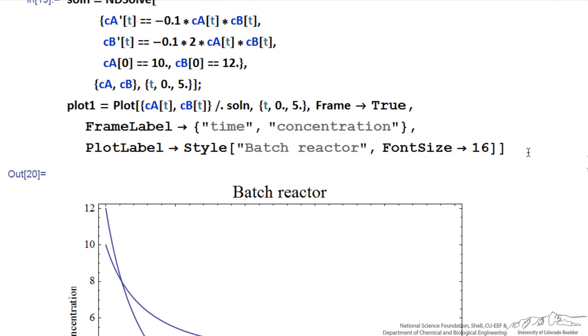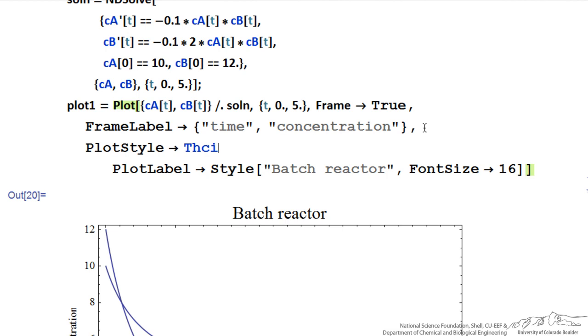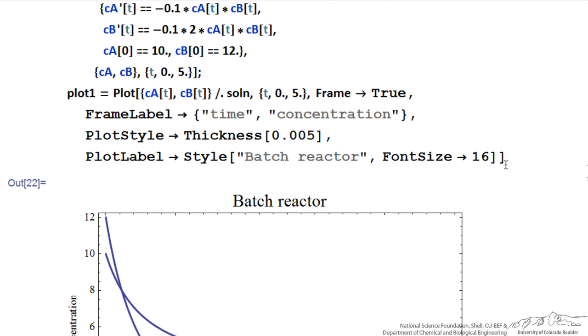You can also change the thickness of the lines, it's in the plot command, let's add it in here. So the command then is plot style, again the arrow, and thickness, and now square brackets, and the thickness, I'm going to use 0.005, and remember I have to now put a comma after this option. This corresponds to a half percent of the height of the graph, shift enter, you can see the lines got thicker.